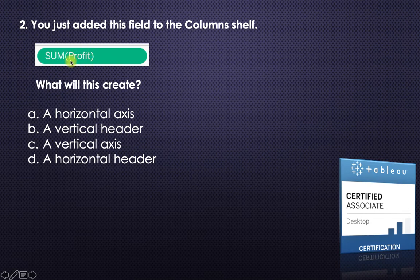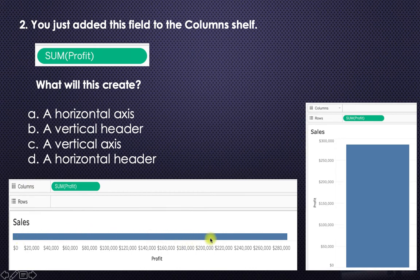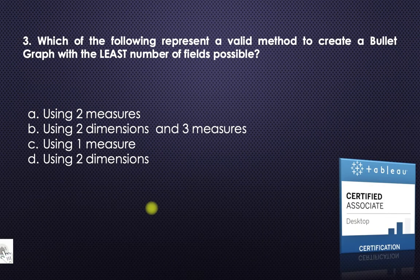You've added the profit field — or any measure field — to the columns shelf. This is the view you get. And if you drop a measure field in rows, you get a different view. Since they're asking about columns, basically you get a horizontal axis. So option A — a horizontal axis — is the answer.